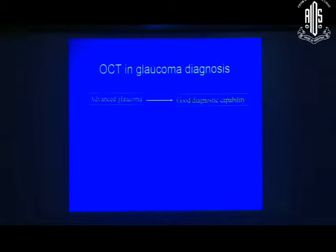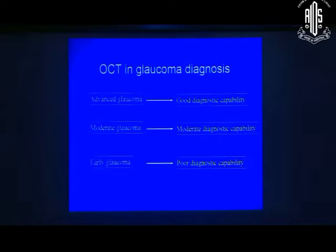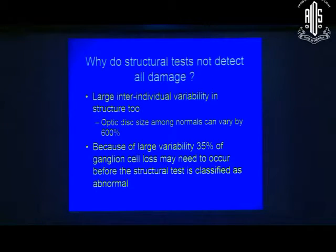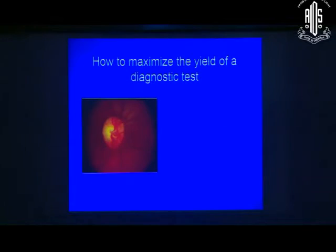So in OCT in advanced glaucoma, it has a good diagnostic capability. In moderate glaucoma, it has moderate diagnostic capability. In early glaucoma, it does not do as well. And this is true of all imaging, not just OCT. The reasons for that is this large inter-individual variability in structure. The optic disc varies by 600% between normal and abnormal. There's probably no other organ in the body which shows that amount of variability. In fact, if you want to pick up every single person with imaging, you probably need to have 35% ganglion cell loss before you can do that. Very similar to perimetry if one thinks about it.